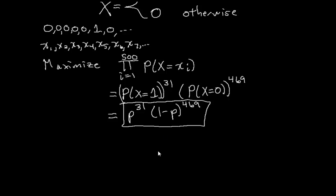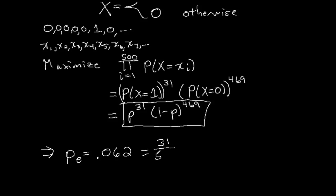So going back to the whiteboard, to maximize this expression implies that our estimate for p — we put a subscript e to indicate it's an estimate — should be about 0.062. And that makes a lot of sense. Notice that is 31 divided by 500: 31 of the lightbulbs out of 500 failed. So the probability that a lightbulb fails is just the proportion that failed. As we'll see in future examples and homework, maximum likelihood estimation really usually does give a sensible result.